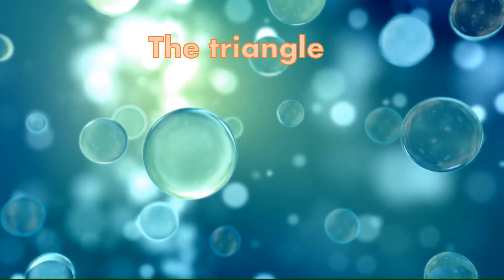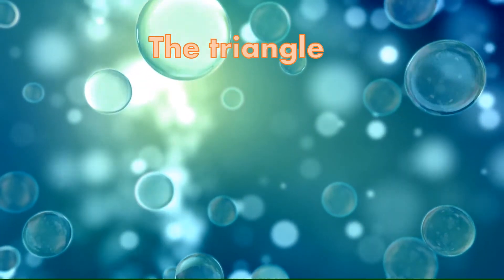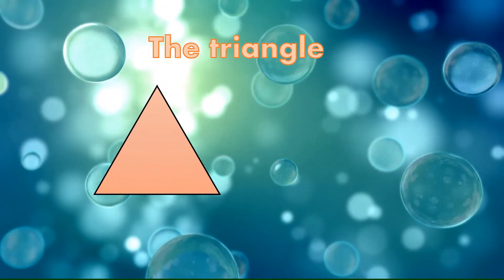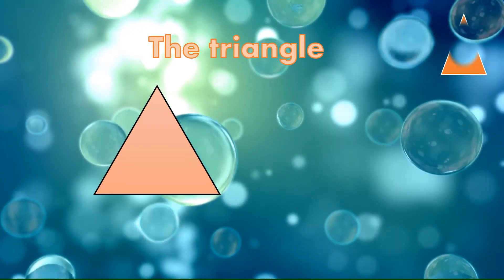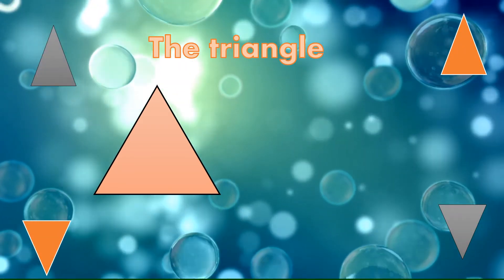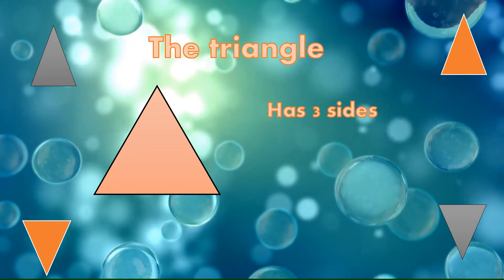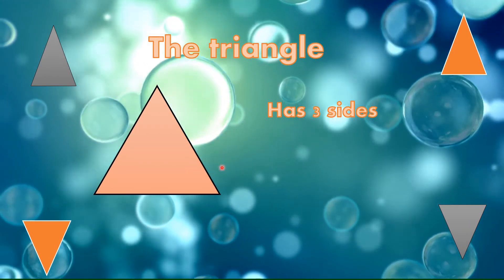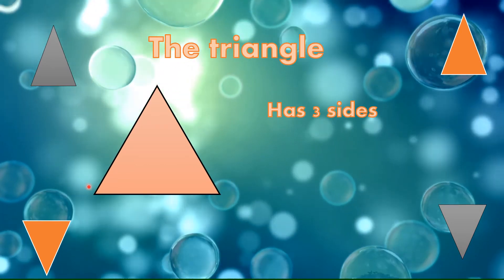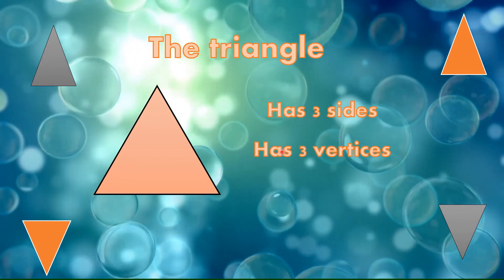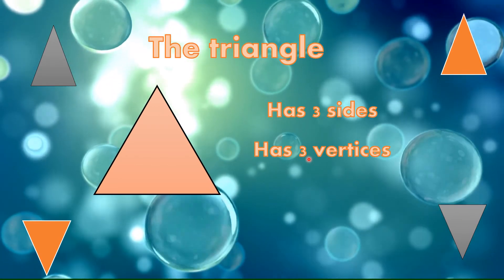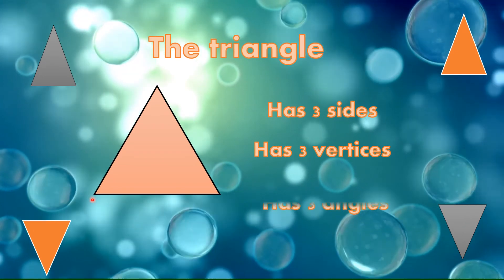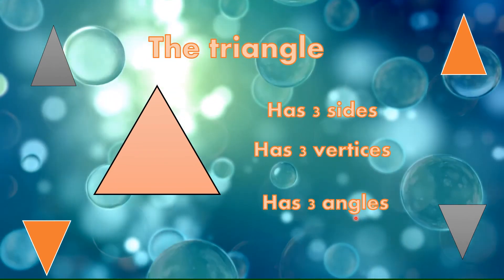Good morning. The second lesson on unit 3 is the triangle. Let's start. A triangle has three sides — one, two, three — and has three vertices — one, two, three — and has three angles.